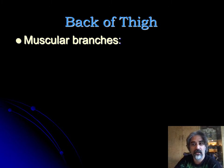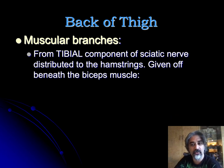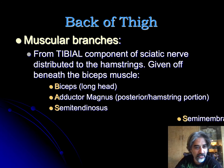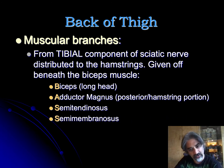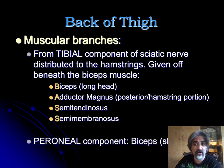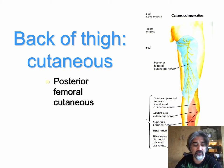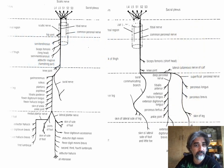So the muscular branches — most of them are coming from the tibial nerve, and those go to all the hamstrings except the biceps femoris short head. I tried to make a mnemonic: BASE — Biceps long head, Adductor magnus, Semitendinosus, and Semimembranosus. The peroneal component only gives you the biceps short head. At the back of the thigh there's also cutaneous innervation that you need to be able to distinguish when someone has numbness and tingling.